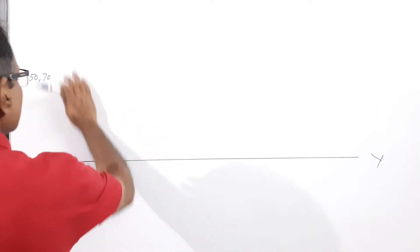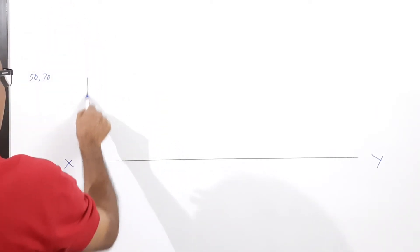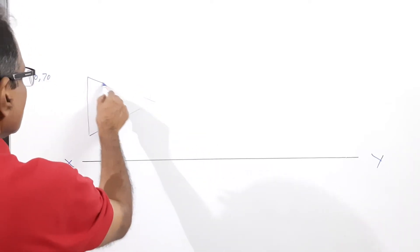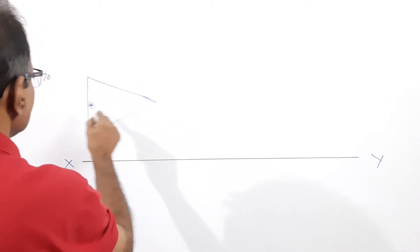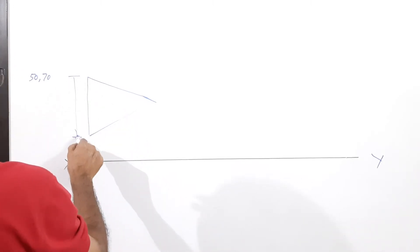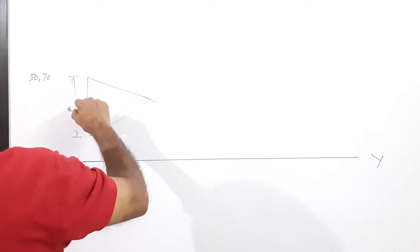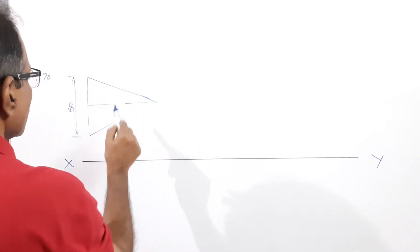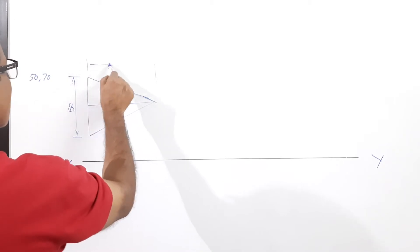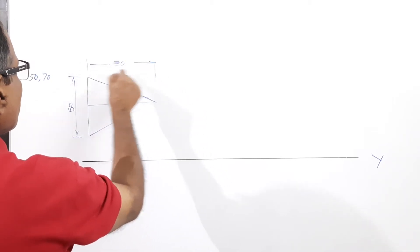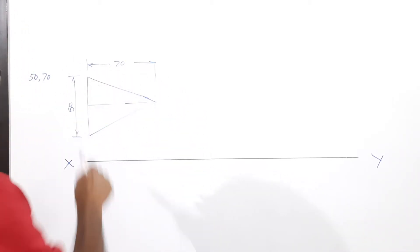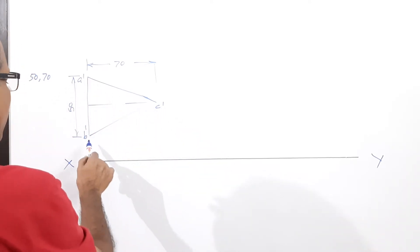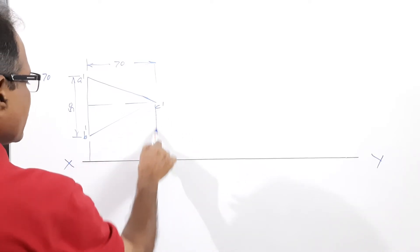I keep the lamina on VP like this. This is the elevation. This is the base — 50 mm. This is the altitude — 70 mm. I call the points a-dash, b-dash, c-dash. The plan is a, b, c.